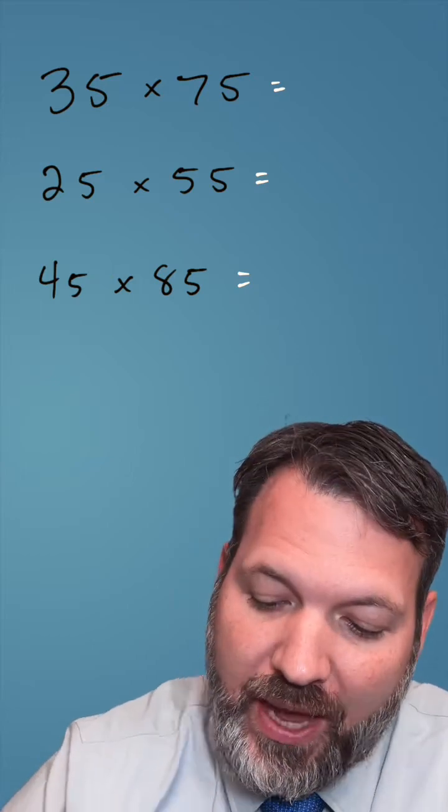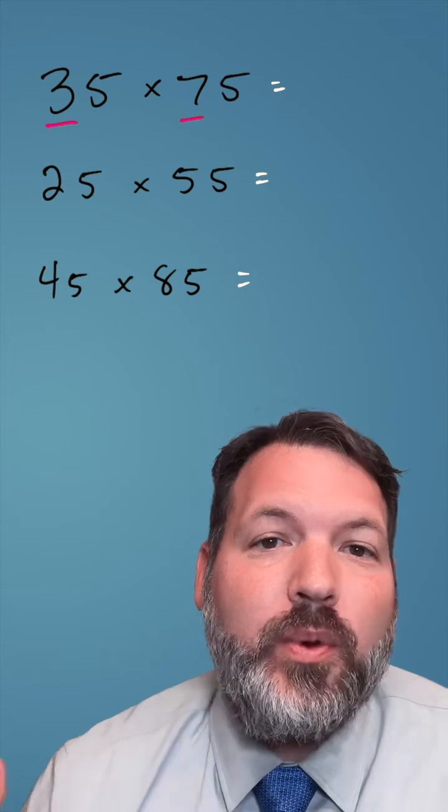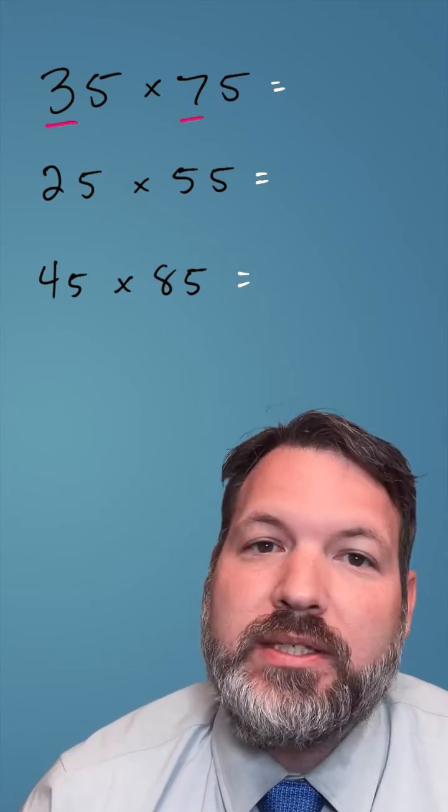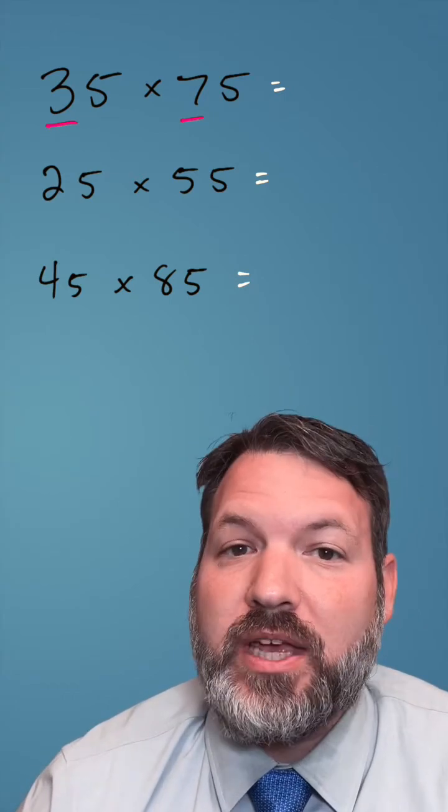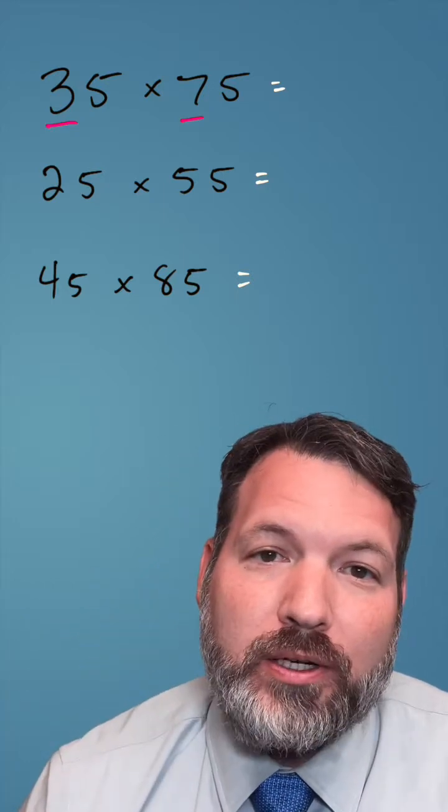The first step is to multiply your tens digits. Three times seven is 21, keep that in your head. And then we want to find the average of three and seven. Three plus seven is 10, half of 10 is five, and we add that average, five, back to the product, three times seven.